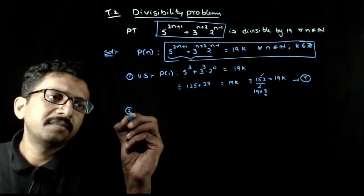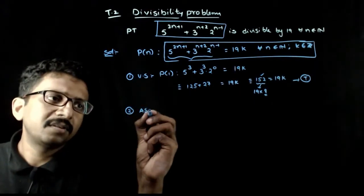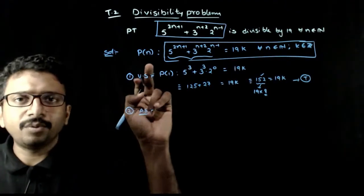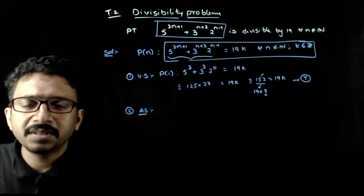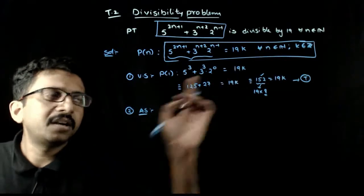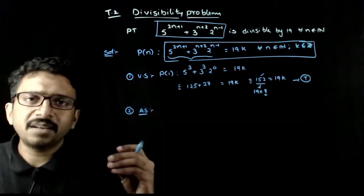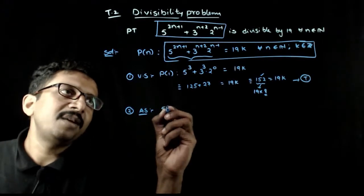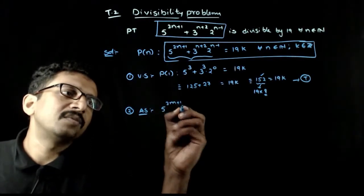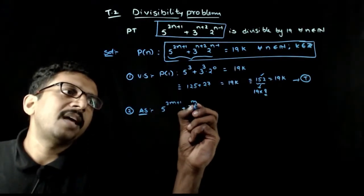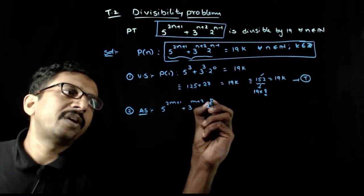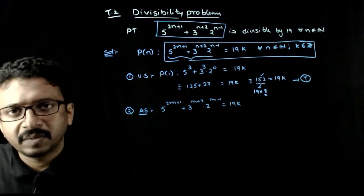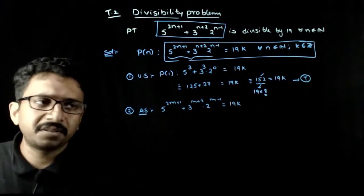Step 2: Assumption step. In the assumption step, I assume that P(n) is true for n equal to some number m. That is, 5^(2m+1) + 3^(m+2) · 2^(m-1) is equal to 19k for some integer k.